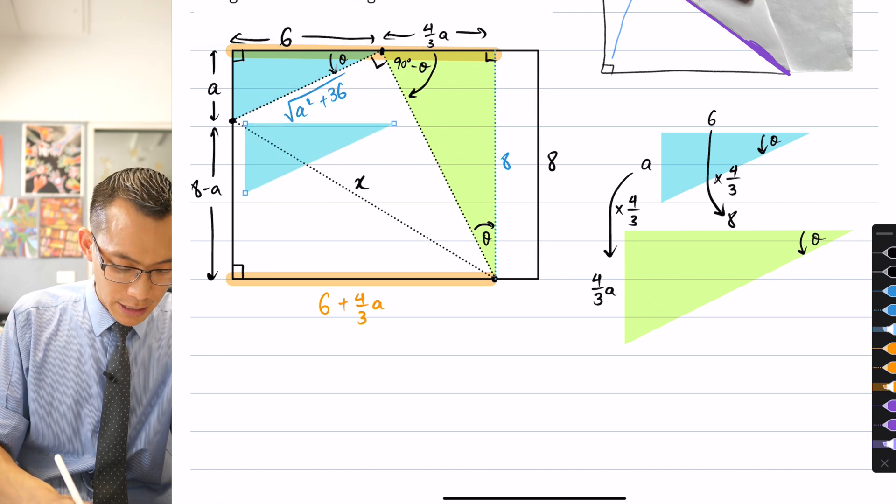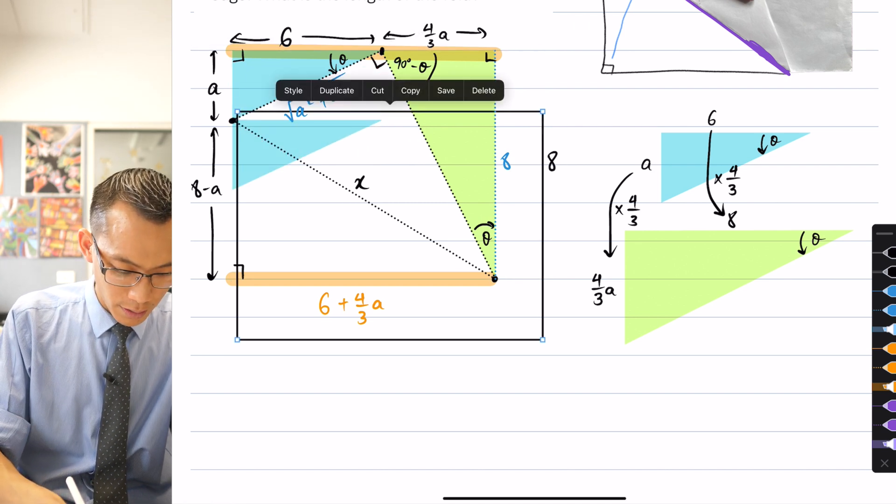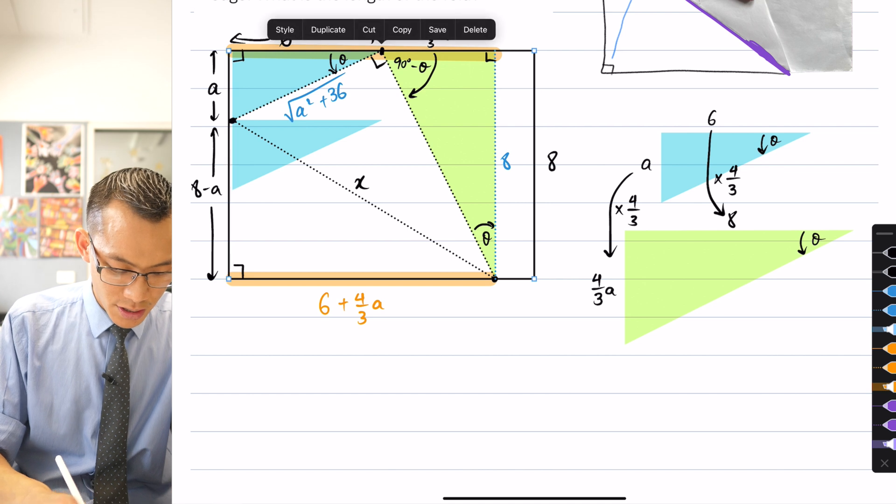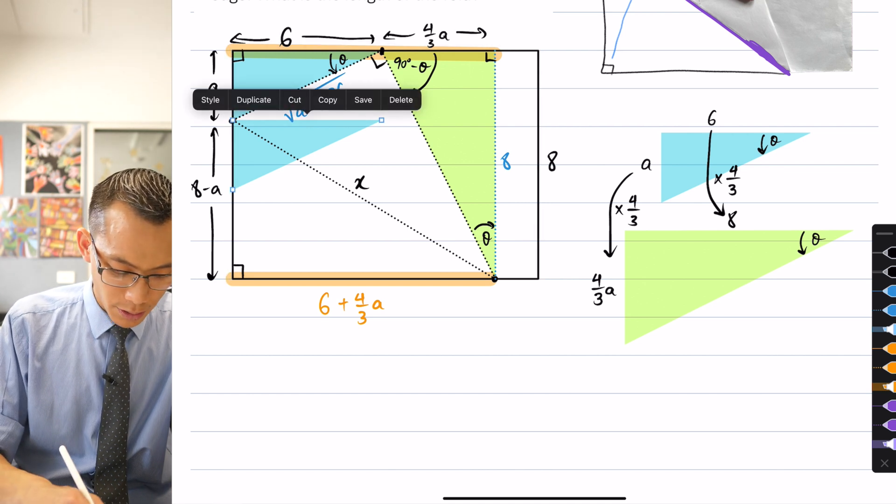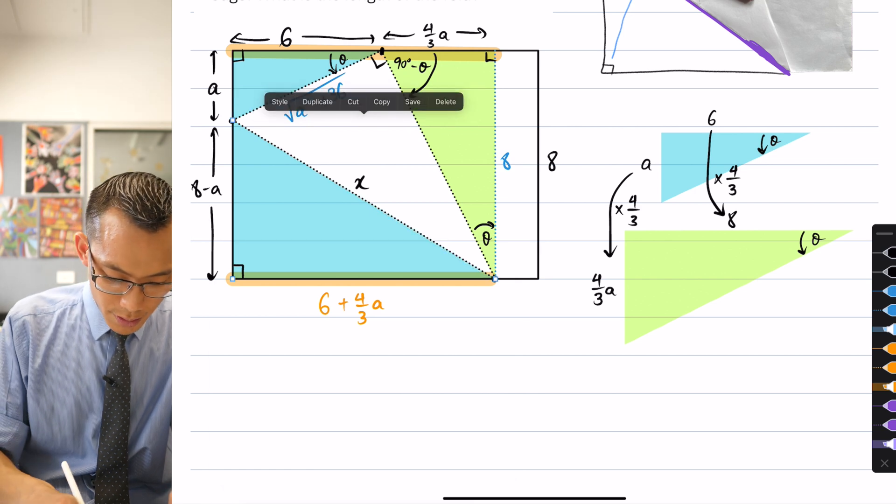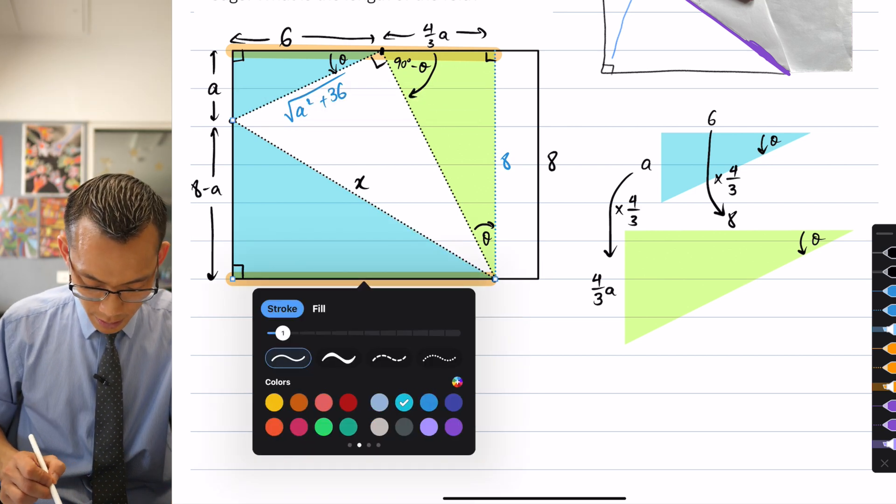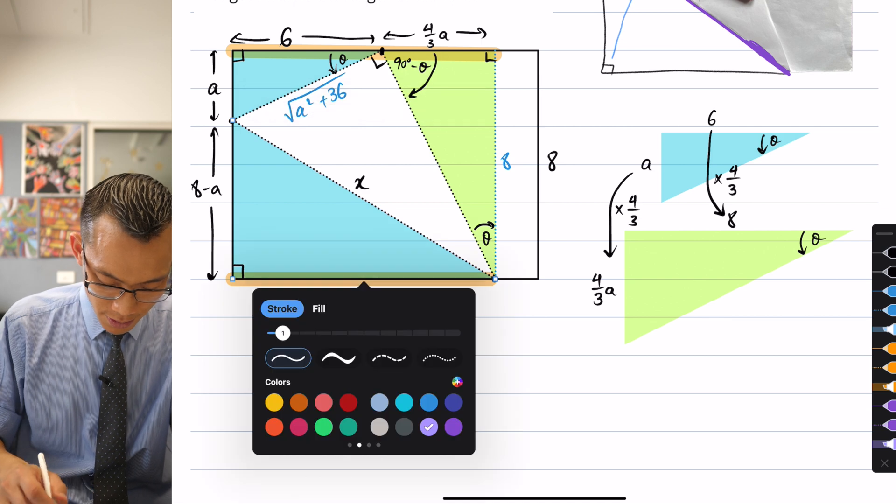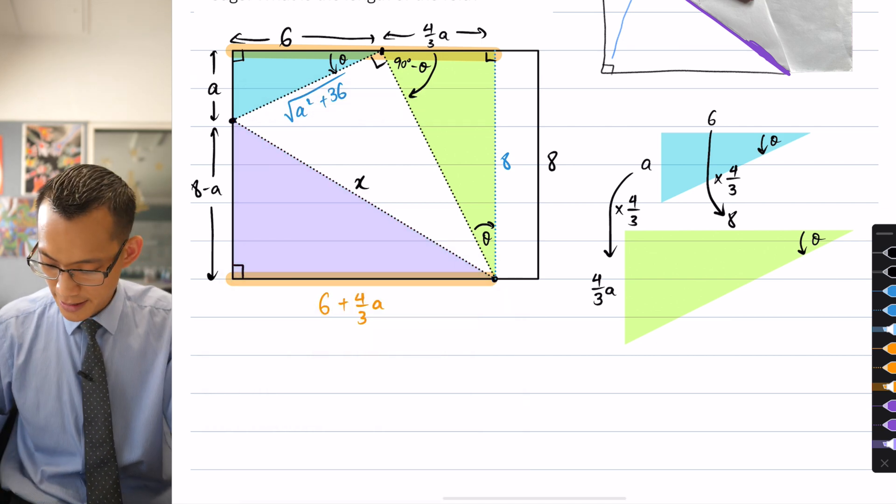So let's actually have a look at this triangle here. I might just give it one more color just so that we can follow this in our working. Let's grab this one, like so, and then let's make it purple, shall we? Not just the outline. Okay, fantastic.